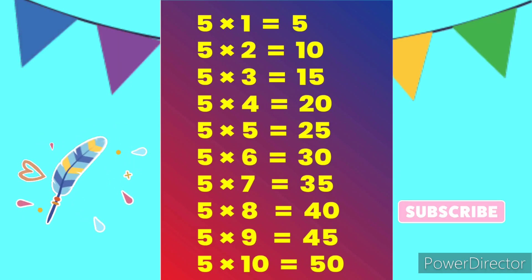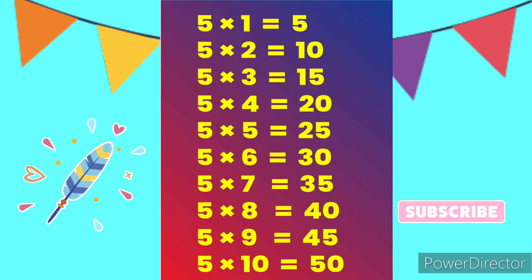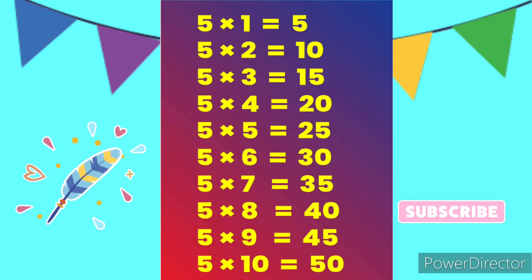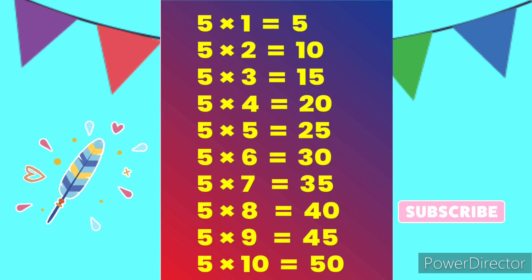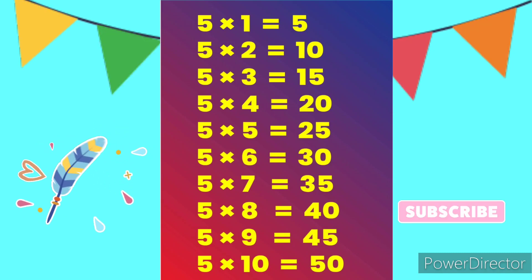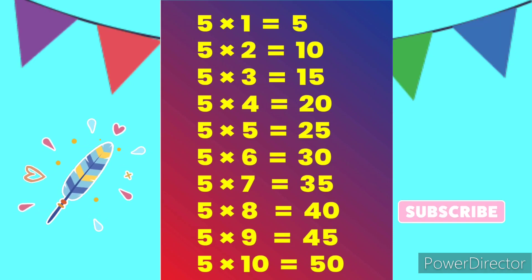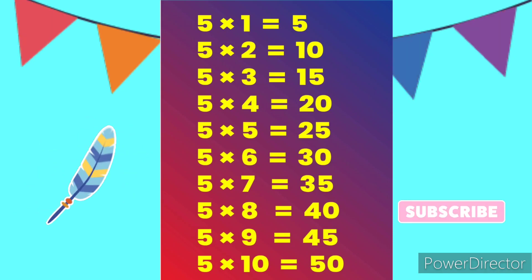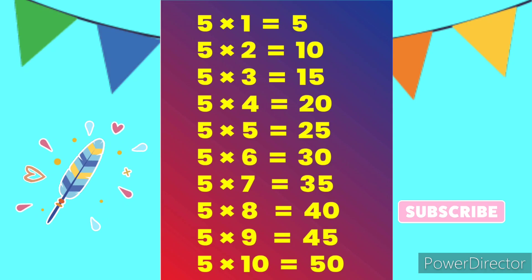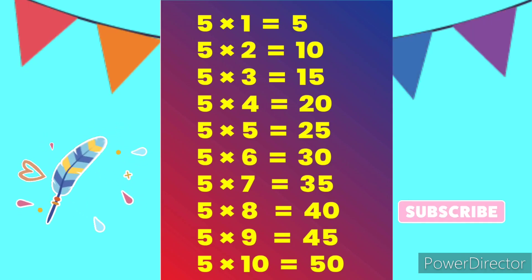5 2s are 10, 5 3s are 15, 5 4s are 20, 5 5s are 25, 5 6s are 30, 5 7s are 35, 5 8s are 40, 5 9s are 45, 5 10s are 50. Bye bye kids.